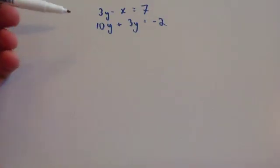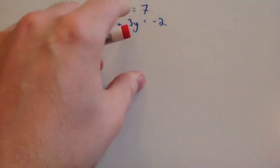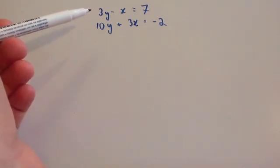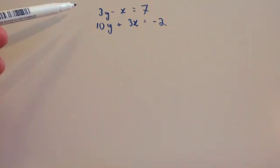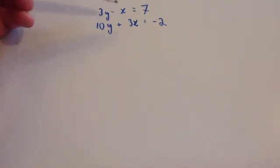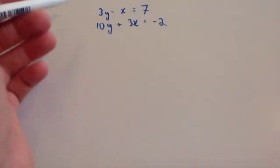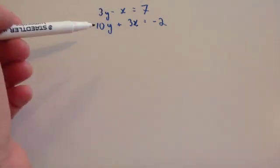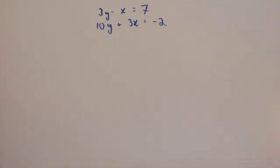Let's look at another example. We've got 3y subtract x equals 7, and 10y plus 3x equals negative 2. We need to make x or y the subject of one of them. It doesn't really matter which one you choose — you can make y or x the subject of either equation. As long as you substitute into the other equation, you'll get the same solutions.